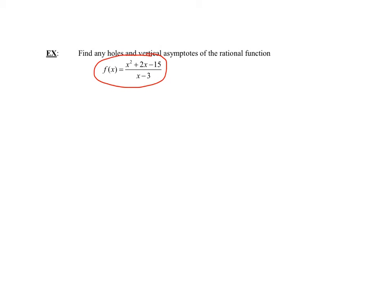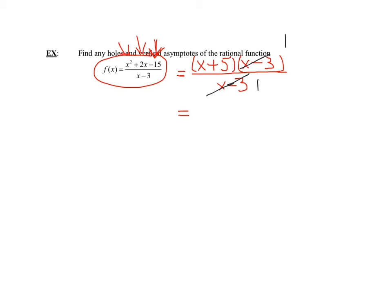Now let's look at the next example. Again, I have a rational function — a polynomial divided by a polynomial. I need to factor, but luckily the denominator is already factored. So I only need to factor the numerator. With a leading coefficient of 1 on x squared, I need two numbers that multiply to negative 15 and add to 2 — that's plus 5 and minus 3. After factoring, the x minus 3 factors totally cancel out, giving the simplified function as long as x does not equal 3.